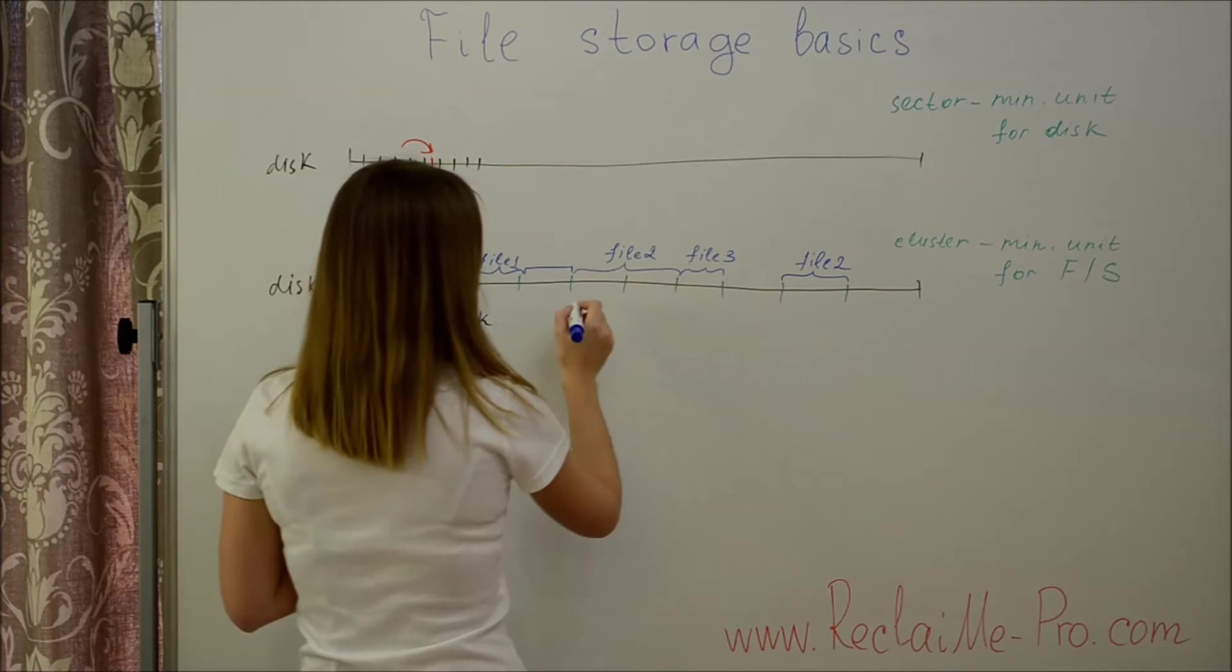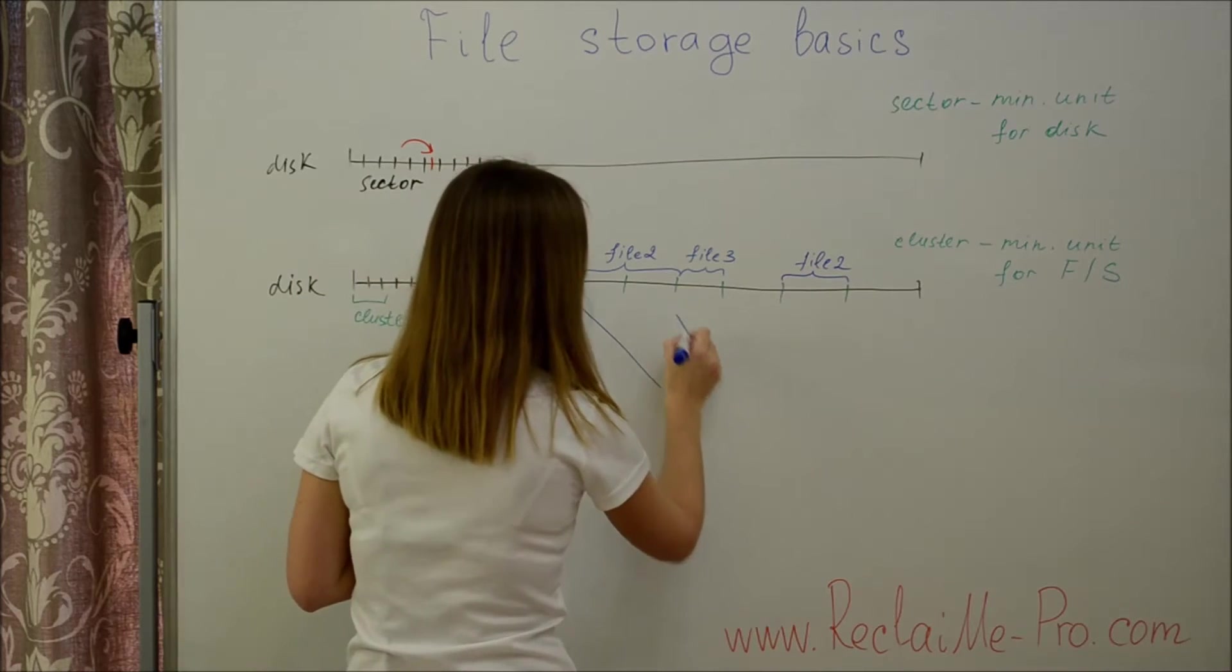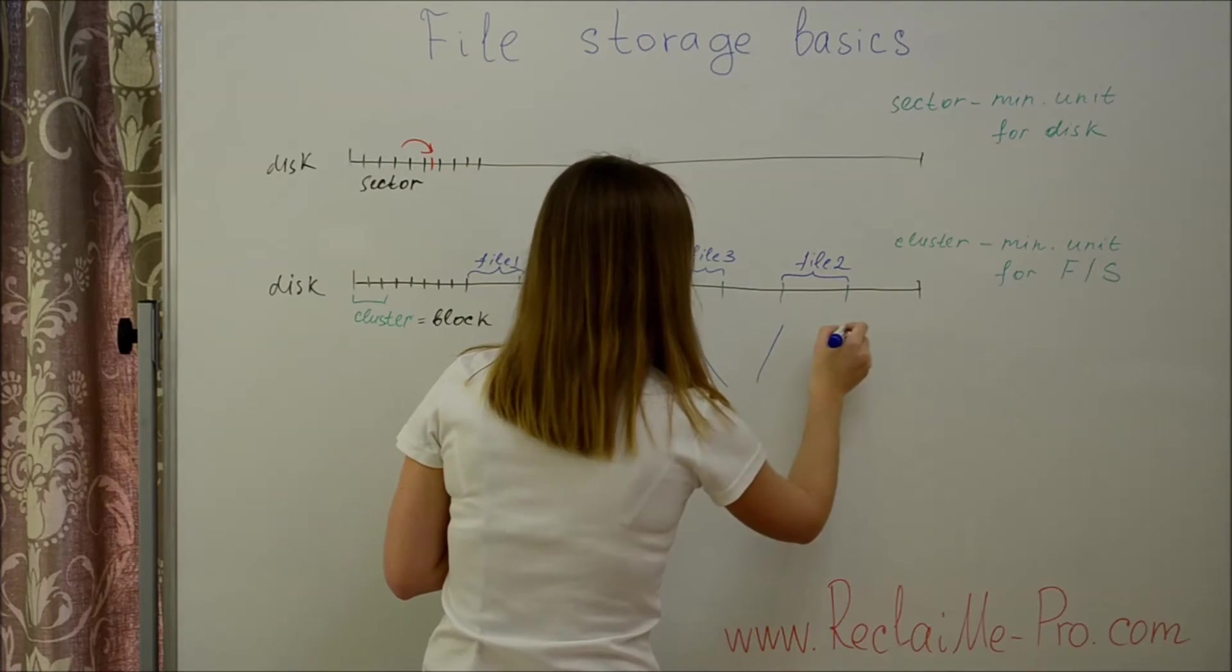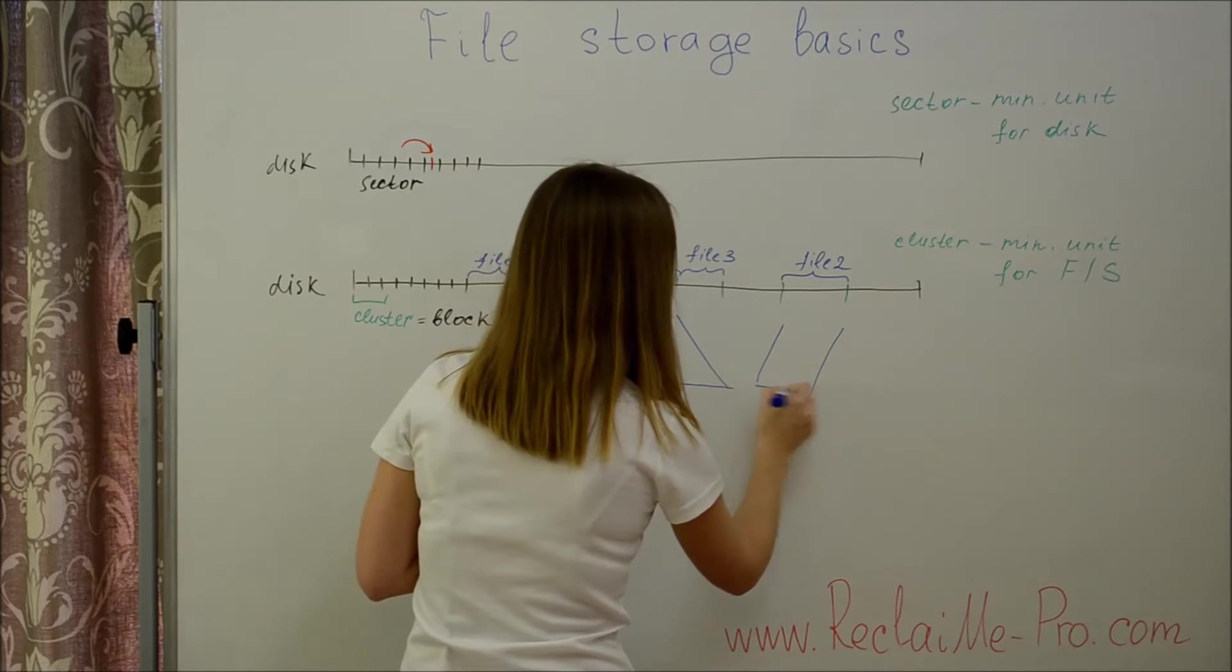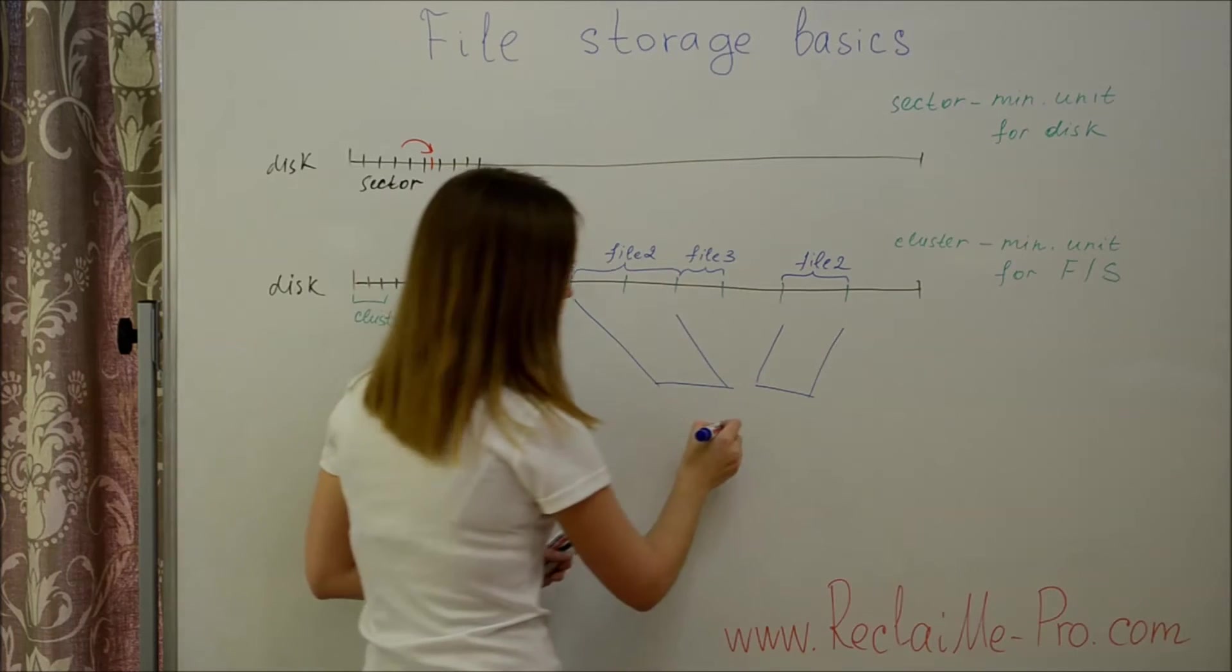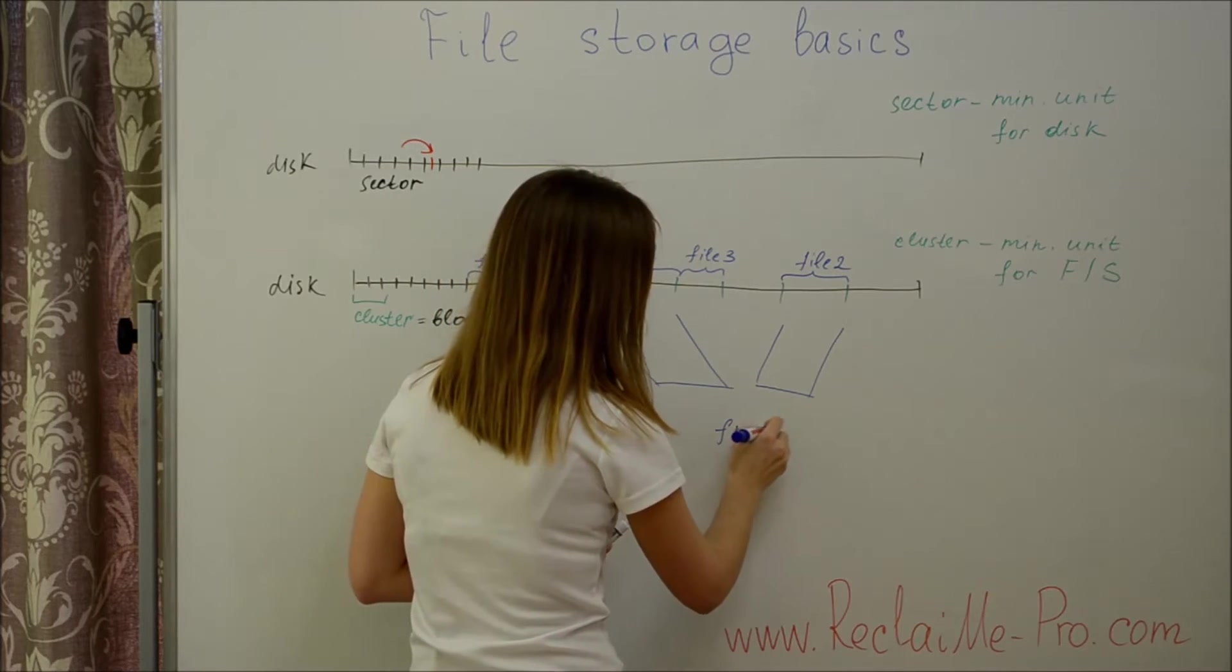Thus, file 2 is stored in two non-contiguous fragments. This is called fragmentation.